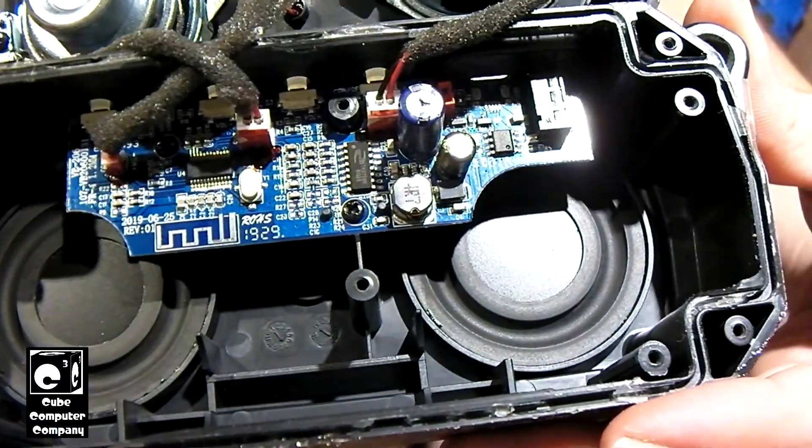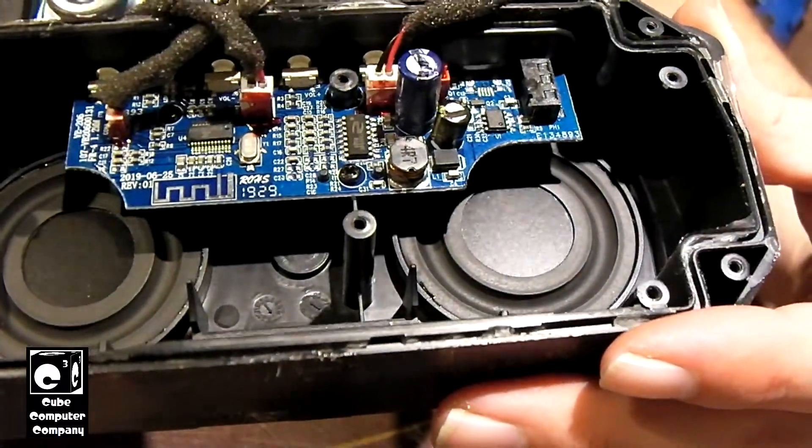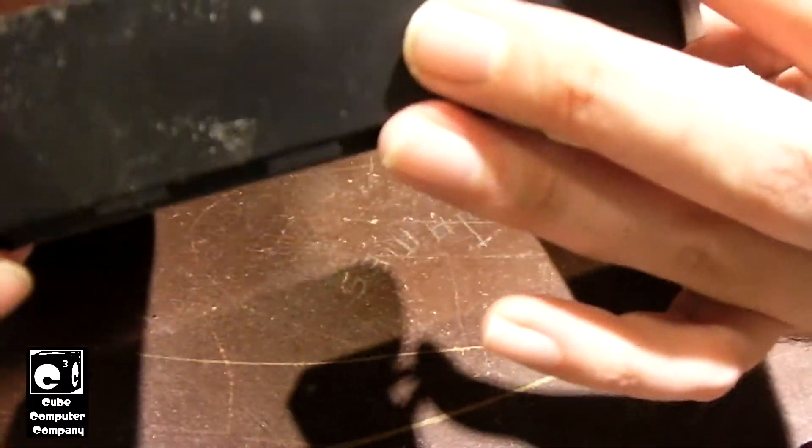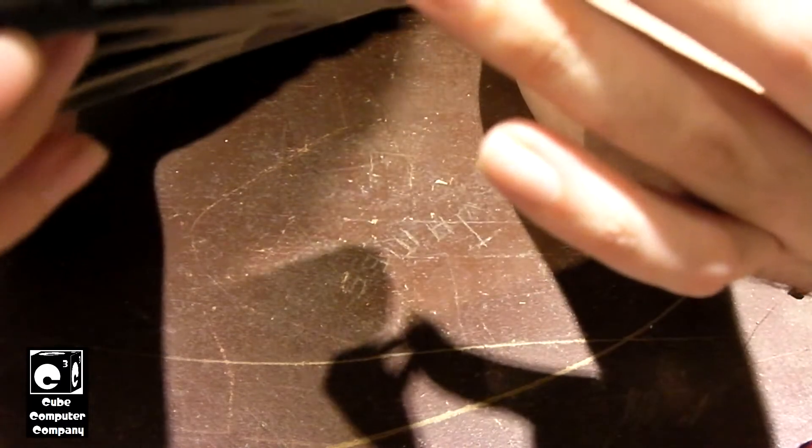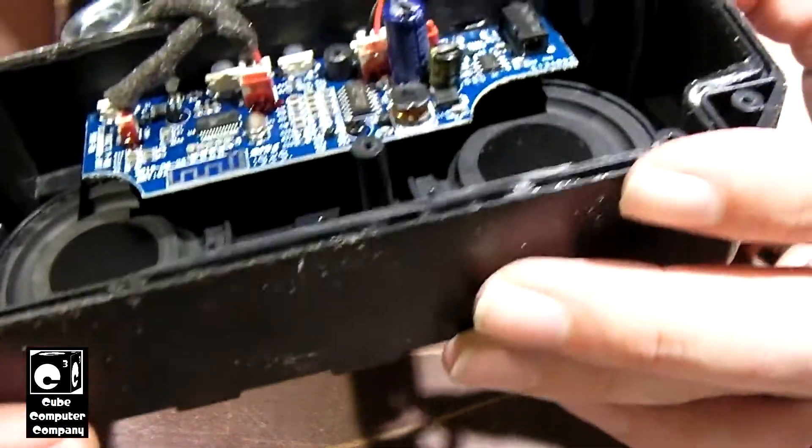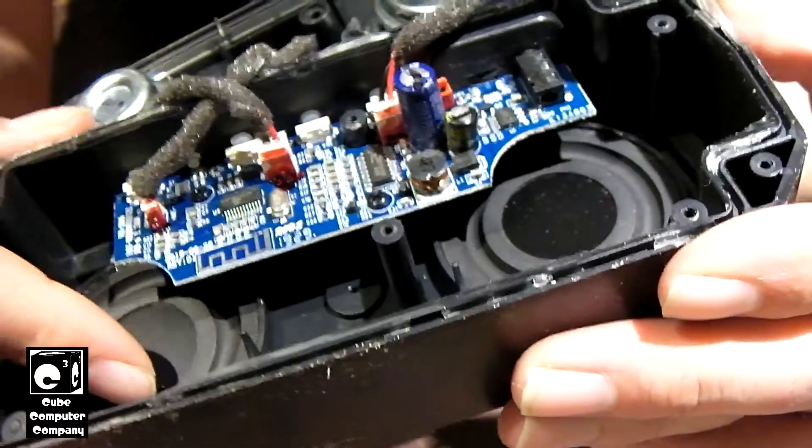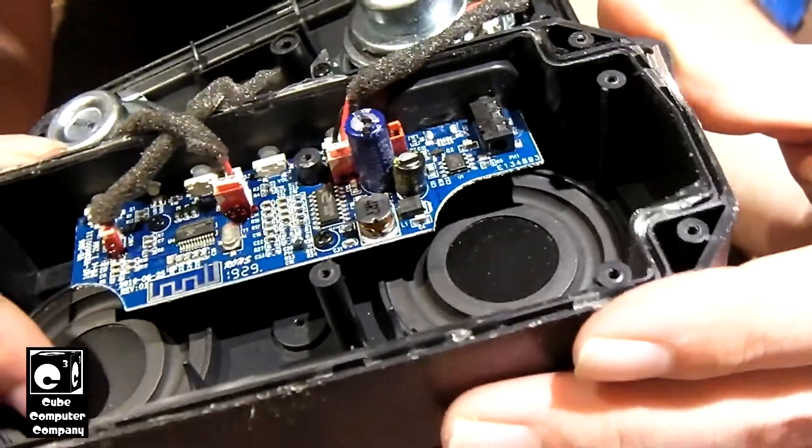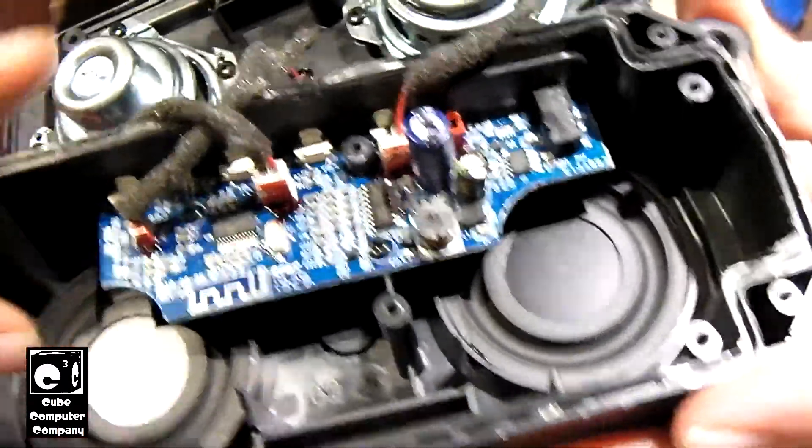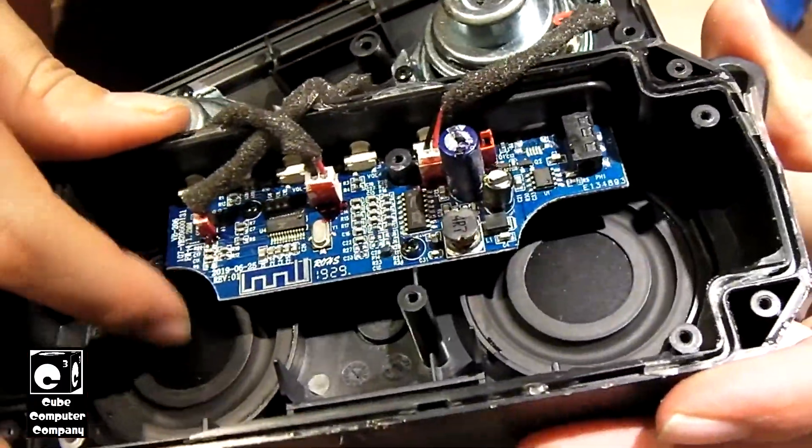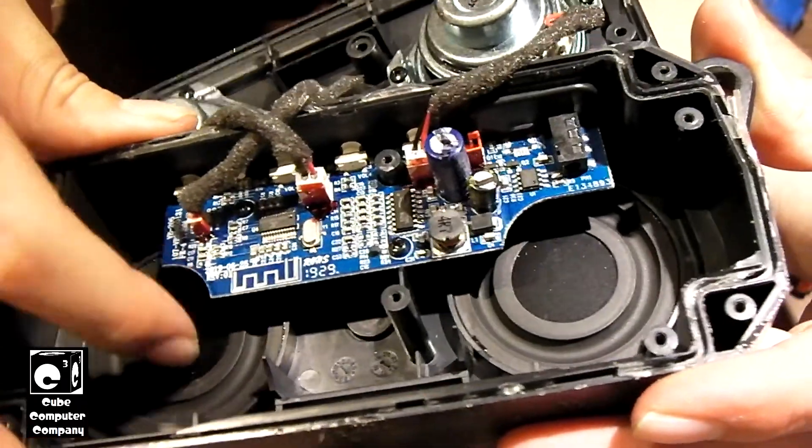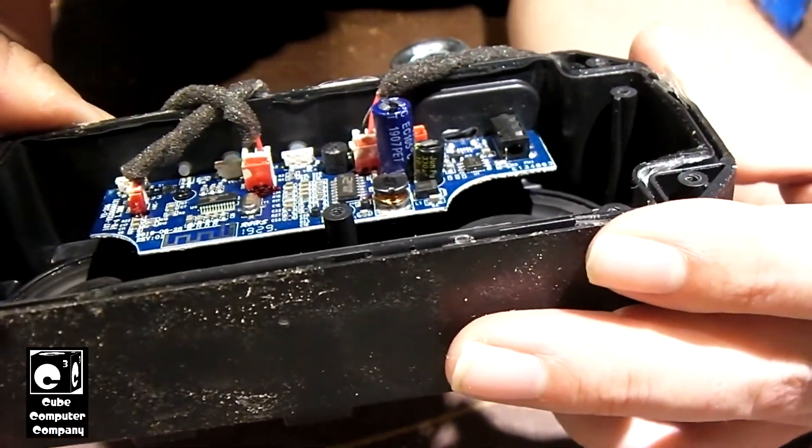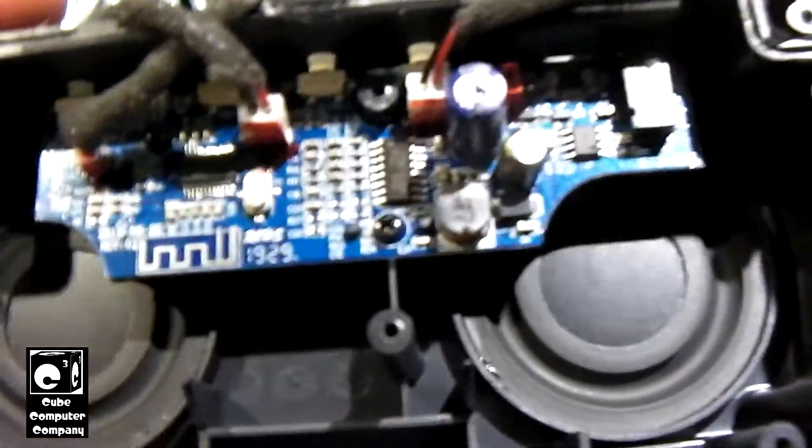And again, this is a Bluetooth portable speaker. You've got actually two speakers in here. And of course, this thing's airtight. So when these speakers up here operate, what's on the other side also flexes too. Here's your close look at the PCB.